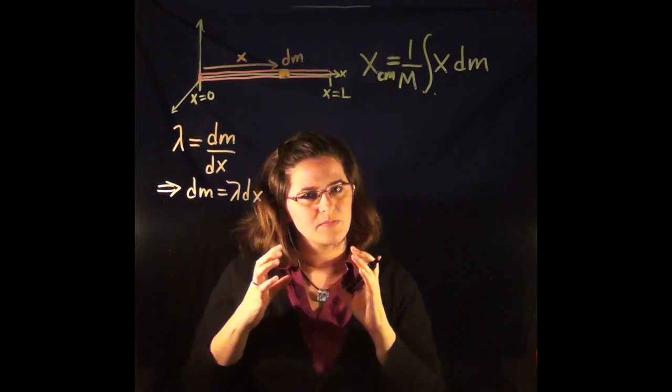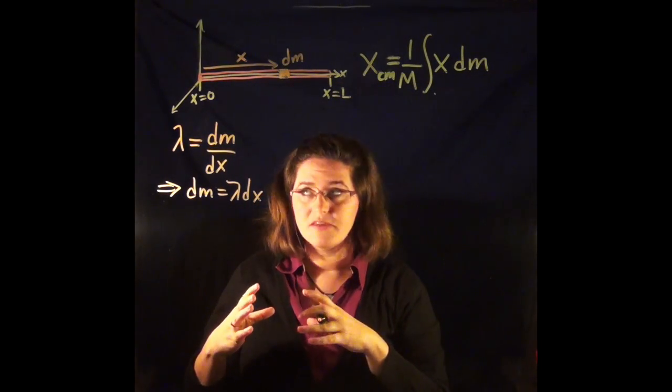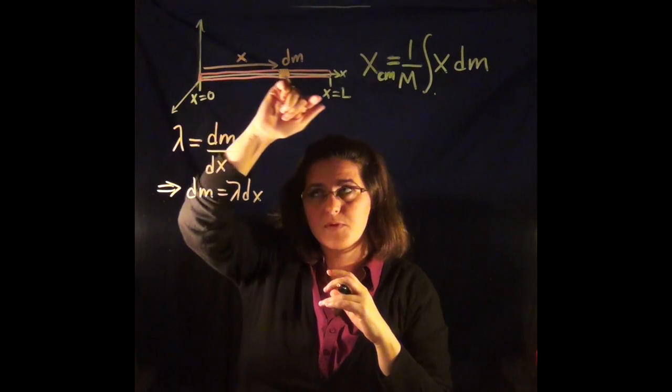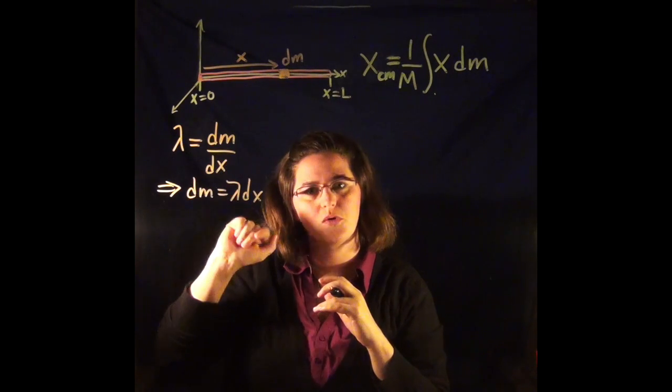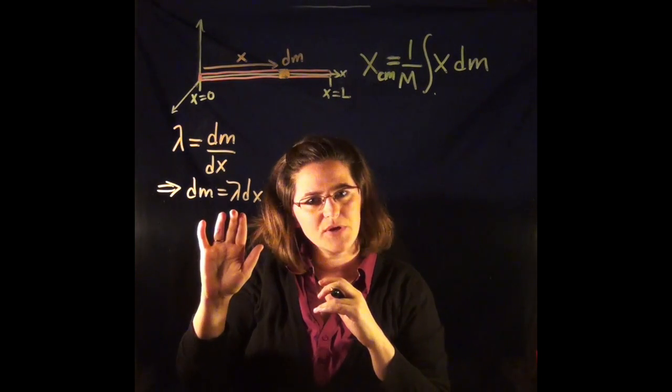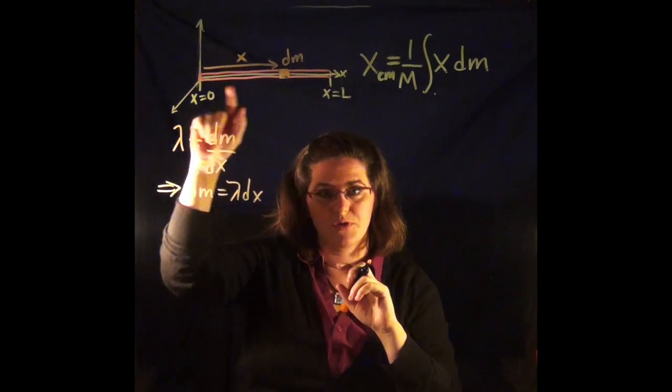Now lambda is a mass per length. If we know this has uniform mass density, then we can plug in the total mass over the total length. Now I would not be able to do that if this was not uniformly distributed.